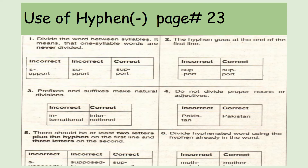Rule 5: There should be at least 2 letters plus the hyphen on the first line and 3 letters on the second. If you need to divide letters, you must also consider the count. You cannot write just 'S' on top with a hyphen and all the rest below. For example, with 'supposed' — write 'sup-' on the first line and 'posed' on the second. Symmetry is very important — the proportion should be balanced.